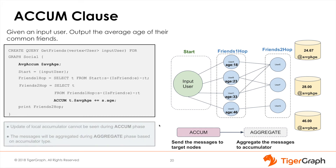To recap: every update of a local accumulator cannot be seen during the ACCUM phase, only after the aggregation is done. The messages that will be aggregated during the aggregate phase are based on each accumulator's type.